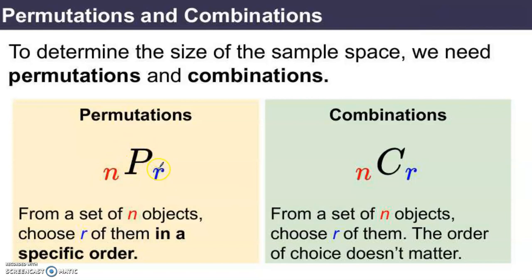choosing this many from the set of N. From a set of this many objects, choose this many of them, and here's the key important phrase here, in a specific order. If the order in which I'm choosing that set of r from the set of N matters, then I need to use the permutations.